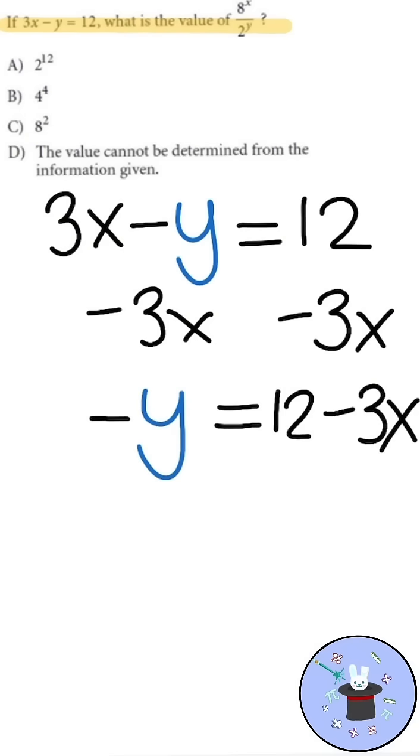Then to fully isolate y, we need to divide by negative 1. We get y equals negative 12 plus 3x.